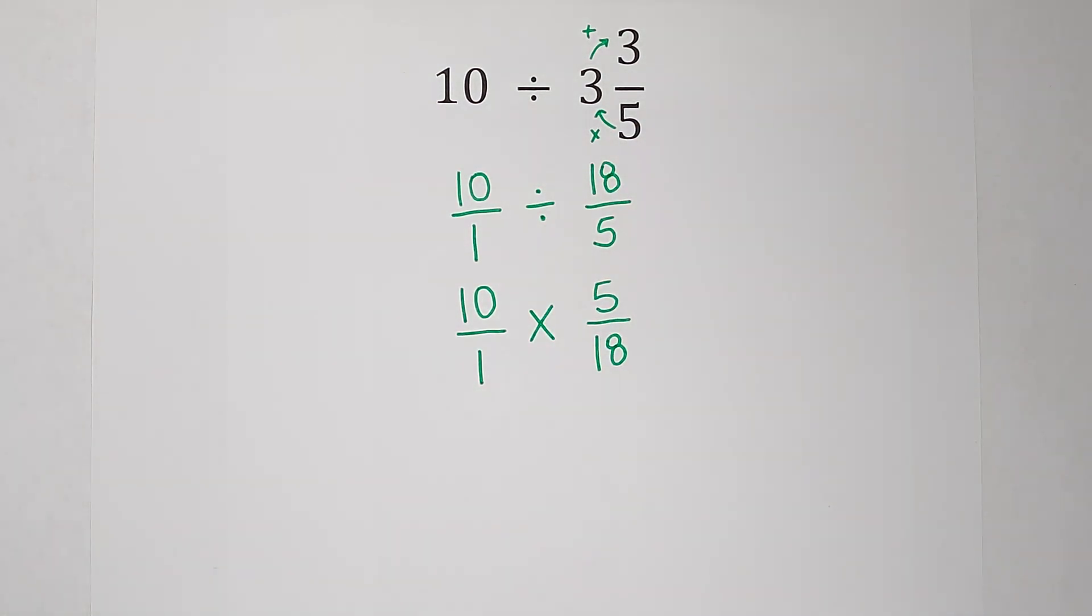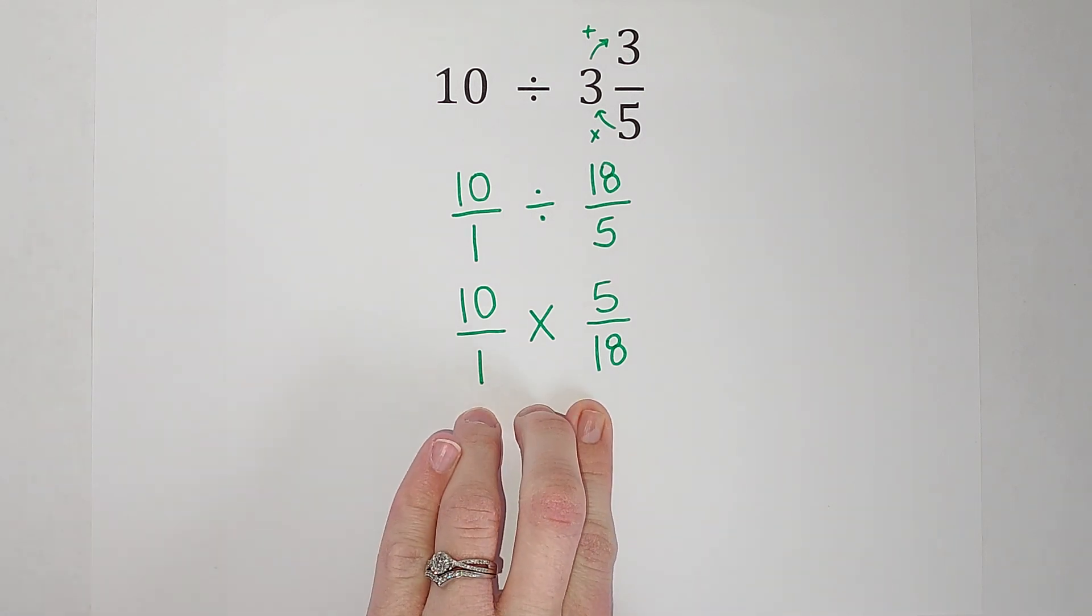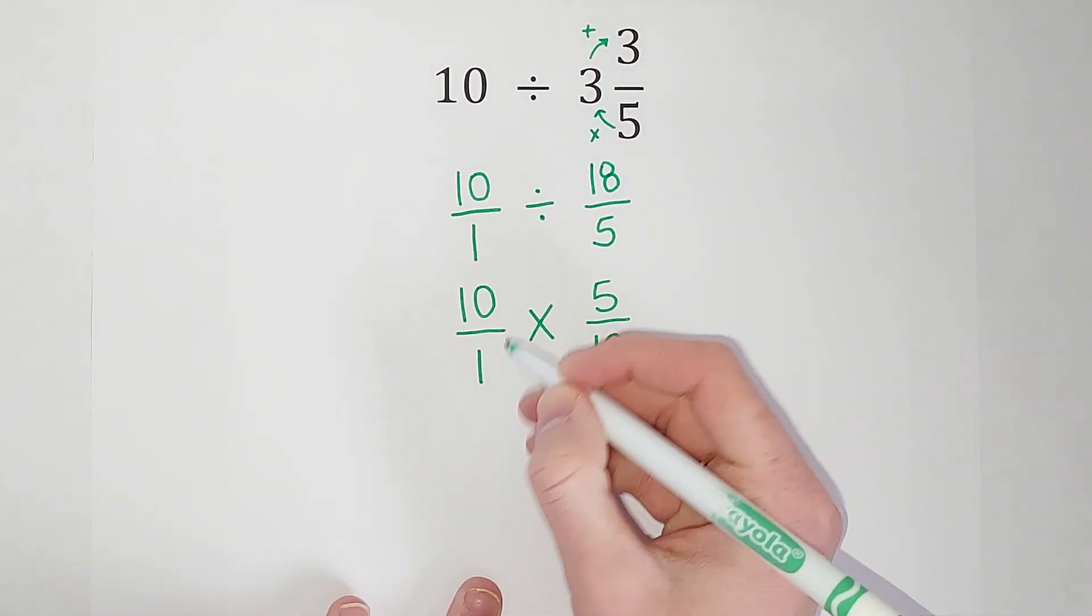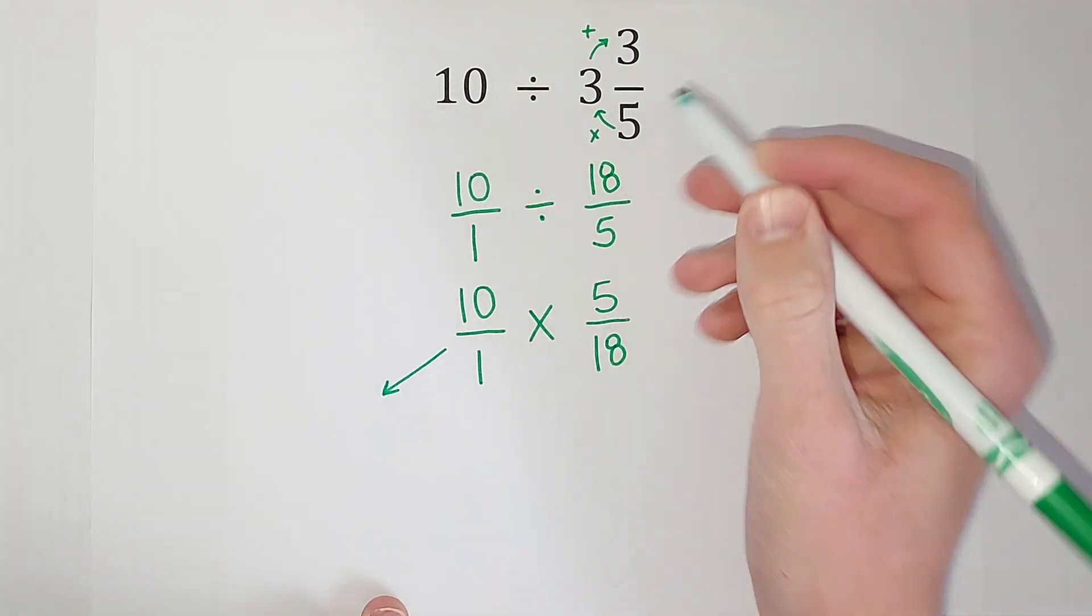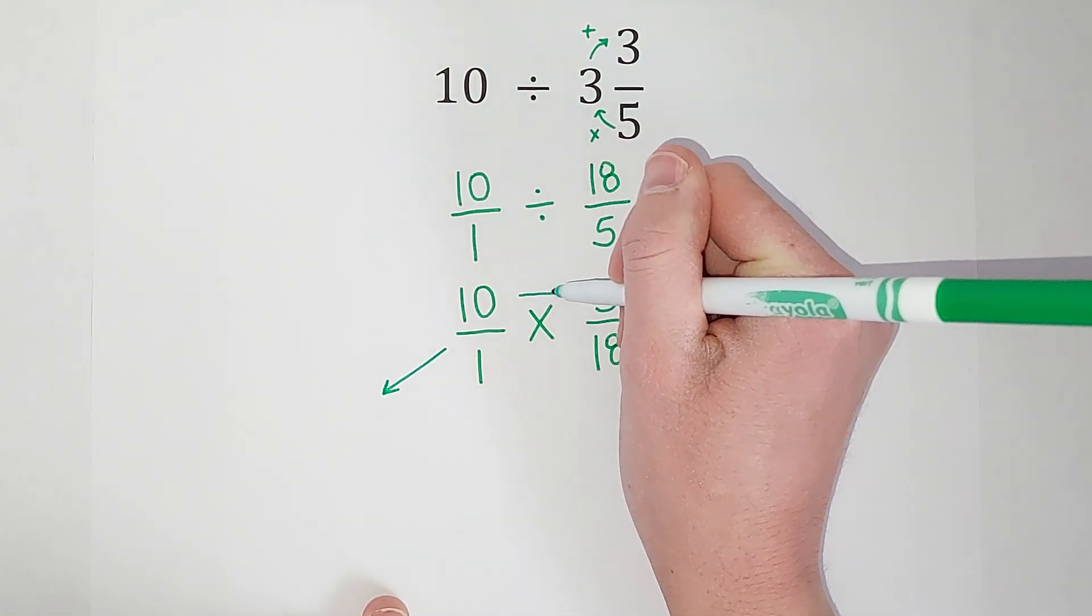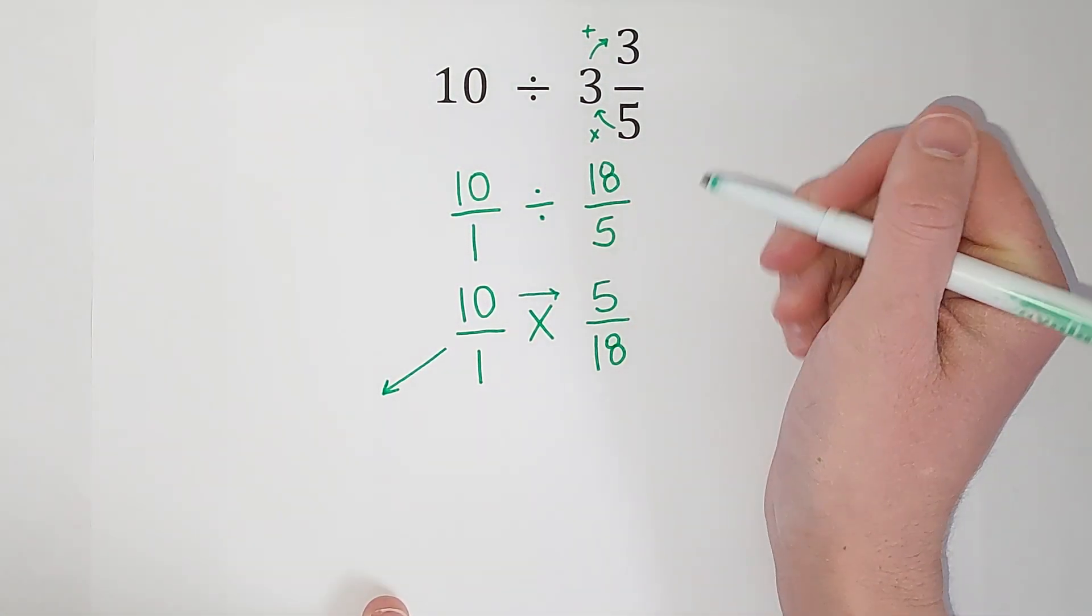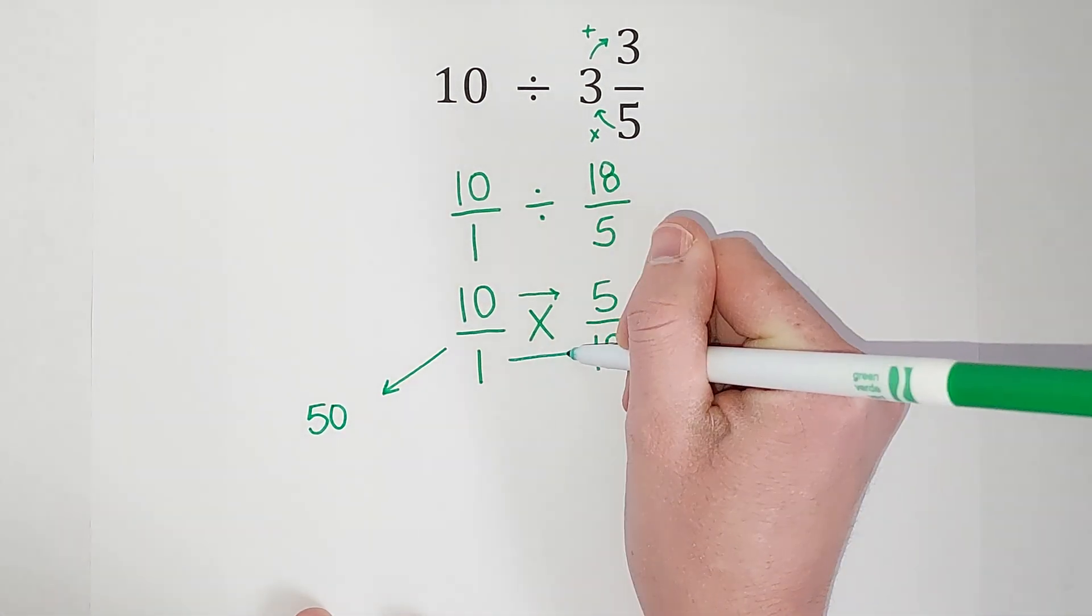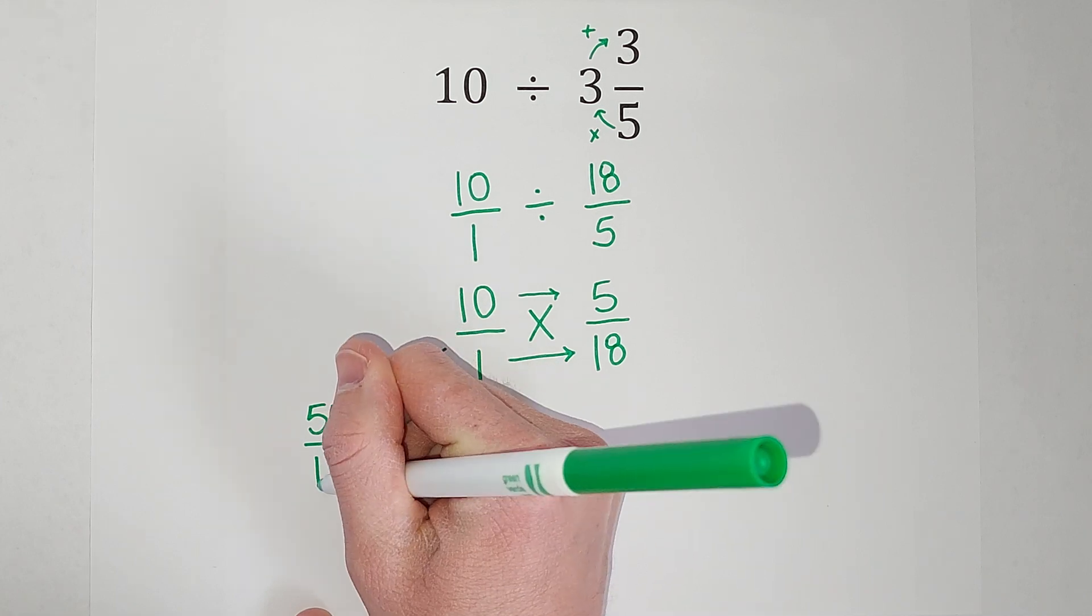Good news when we multiply fractions is that the denominators don't have to be the same, so we can just multiply it now. That being said, there's two ways we can think of this. We can multiply and then simplify, or we can simplify first. So I'm going to show you two different ways. The first way is we're going to multiply first. So we just multiply straight across. So 10 times 5 gives me 50, and 1 times 18 gives me 18.